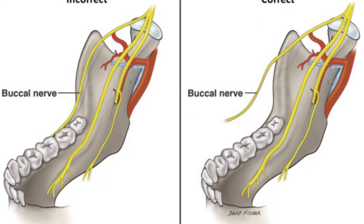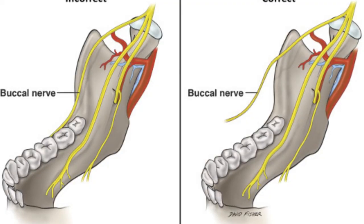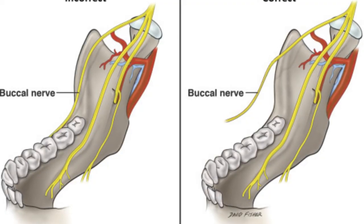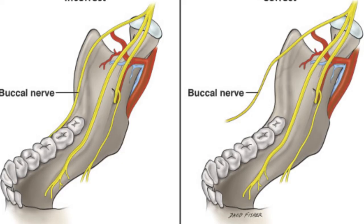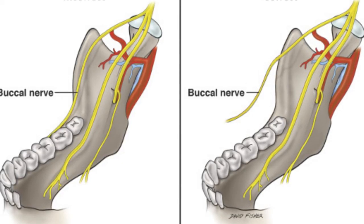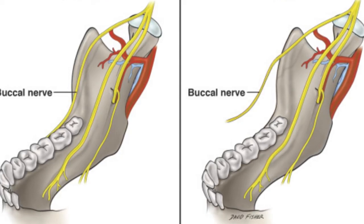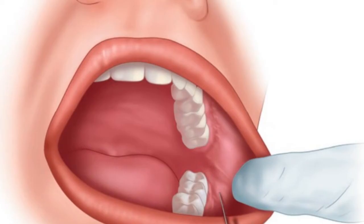Now, how do you give the long buccal nerve block? As you can see, you need to give it parallel to the occlusal plane — not from the contralateral side like with the inferior alveolar nerve block. You will be coming in parallel to the occlusal plane.